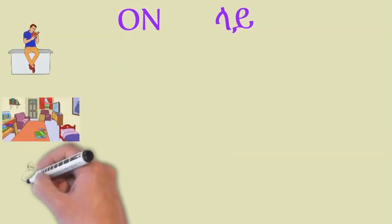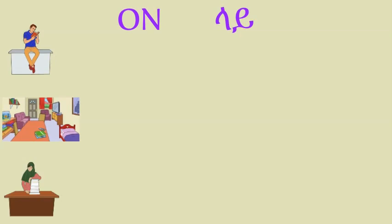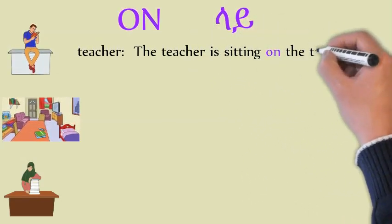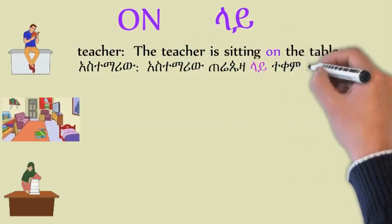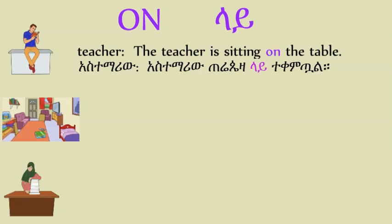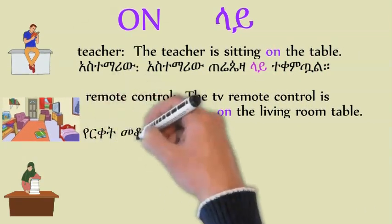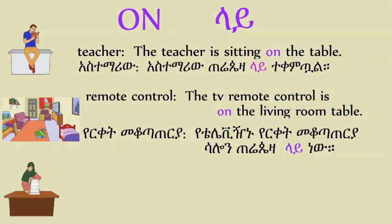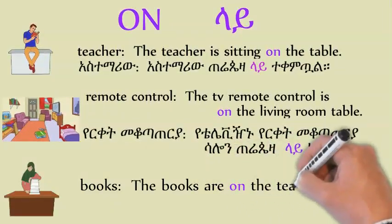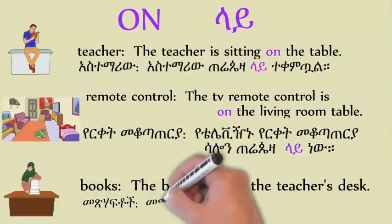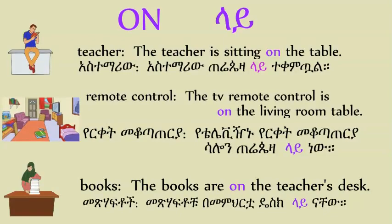On the desk. On the table. The teacher is on the desk. The remote control is on the table. The books are on the table. The teacher is sitting on the table. The TV is on the living room table. The books are on the teacher's desk.